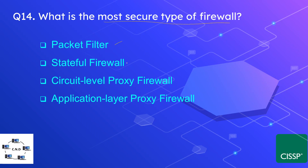Question number fourteen: what is the most secure type of firewall? The options are packet filter, stateful firewall, circuit-level proxy firewall, and application layer proxy firewall. The correct answer is application layer proxy firewall. It is the most secure form because it encompasses all OSI layers and provides protection up to layer seven, the application layer.